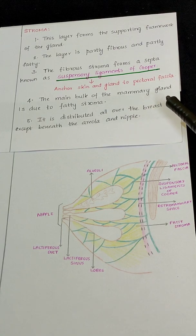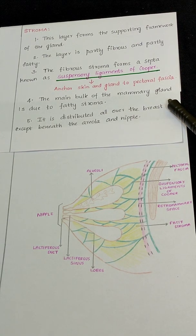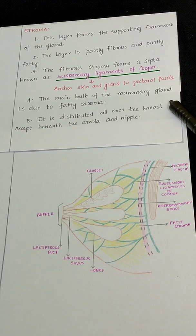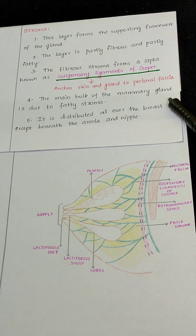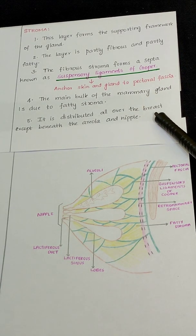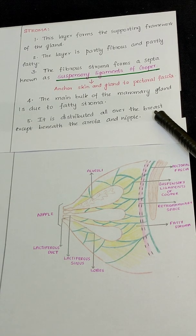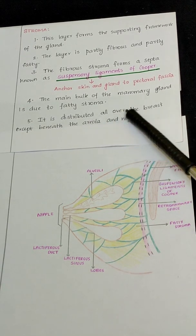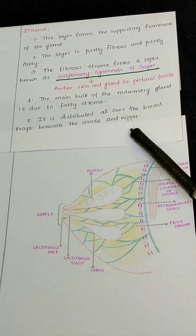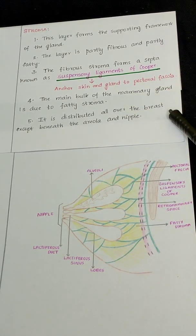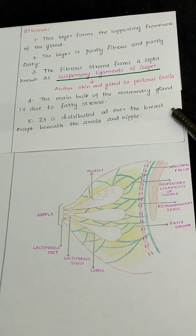The main bulk of the mammary gland is due to the fatty stroma. It is distributed all over the breast except beneath the nipple and areola.